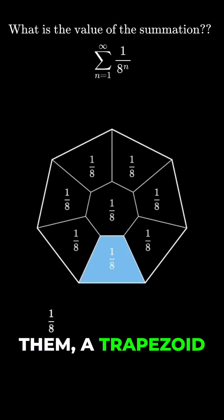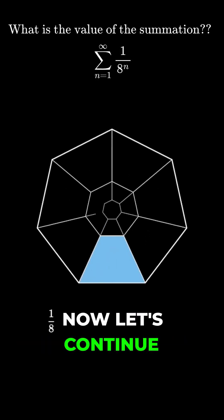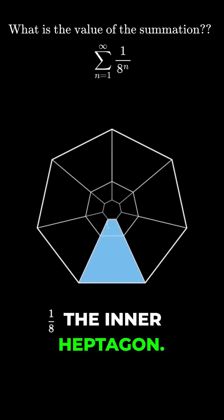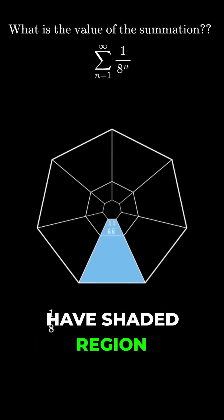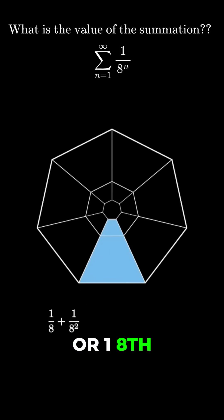One of them, a trapezoid at the bottom, represents one-eighth. Now let's continue this again on the inner heptagon. Now we have another shaded region of one-eighth times one-eighth, or one-eighth squared.